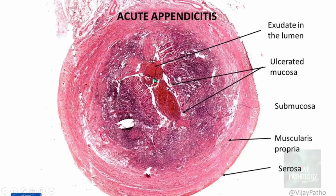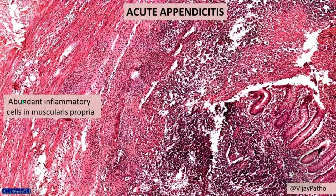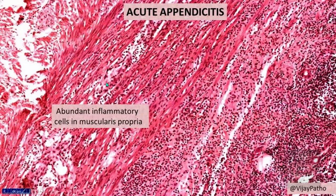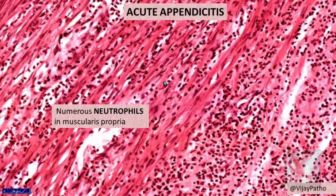On the slide you can see exudate in the lumen and ulceration of the mucosa. The muscularis propria and serosa are identifiable, with abundant acute inflammatory cells in the muscularis propria. Moving from the luminal side — mucosa, submucosa, and muscularis propria — you can make out numerous neutrophils with multi-lobated nuclei in the muscularis propria, confirming the diagnosis of acute appendicitis.